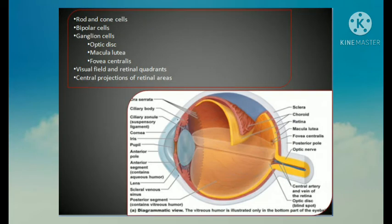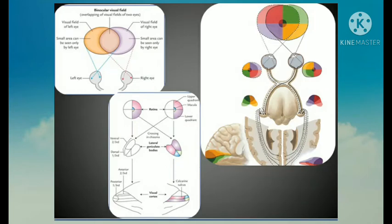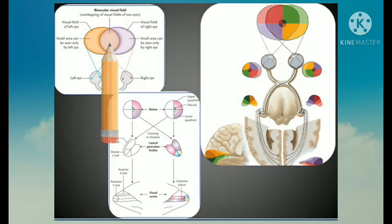Regarding the visual field and retinal coordinates: when someone looks straight ahead with the eye fixed, that part of the external world which can be seen with each eye is called the visual field of the eye. It is the area within which an object can be seen while the eye fixes on a spot of light or object. Laterally it extends up to 104 degrees, and on the nasal side 65 degrees. In front, there is a cone-shaped area where the visual fields of the two eyes overlap.